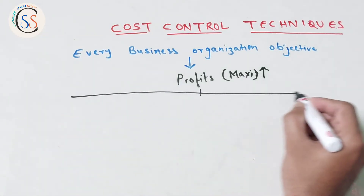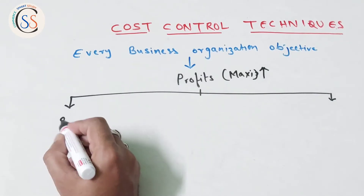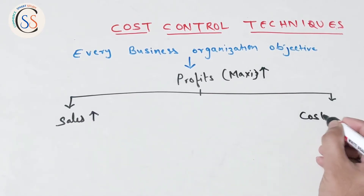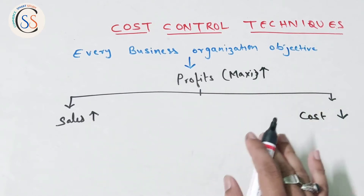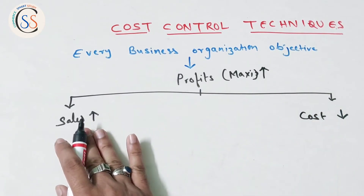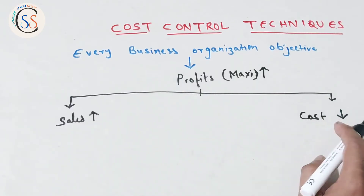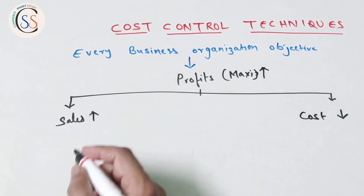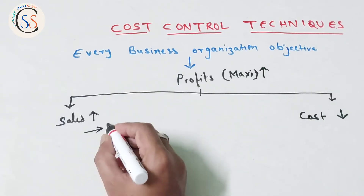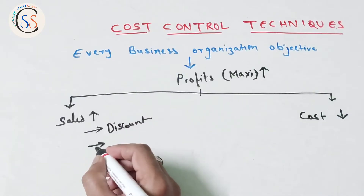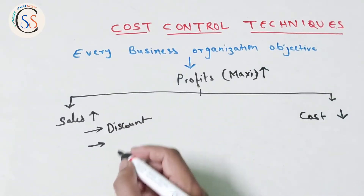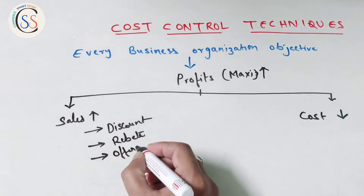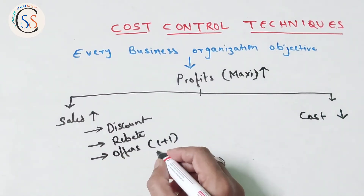One way is to increase sales. By selling more goods and services, you increase revenue. The second way is to reduce cost. By increasing sales, profit increases. By reducing cost, profit also increases. Sales can be increased through discounts, rebates, and special offers like buy-one-get-one deals.